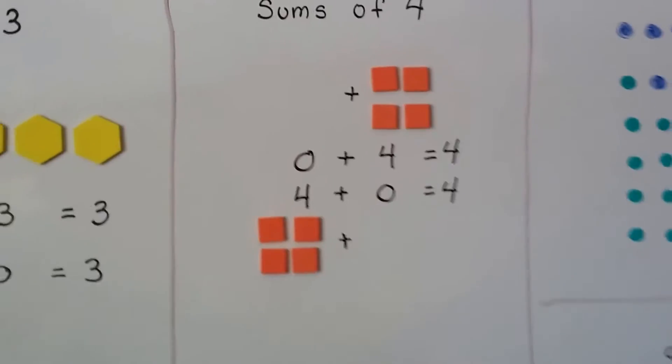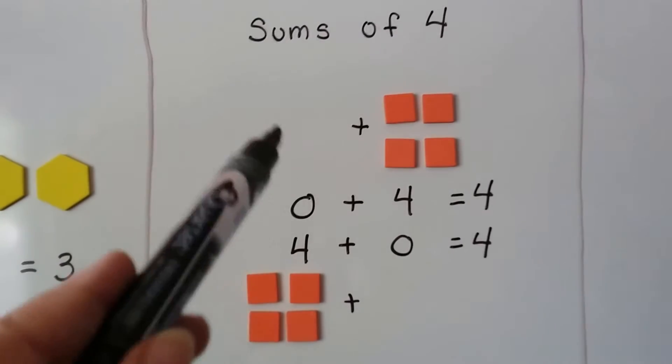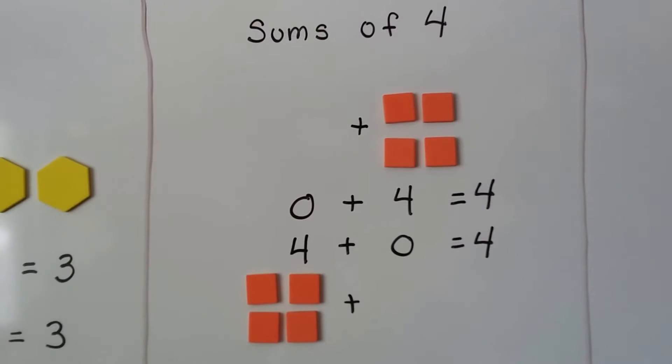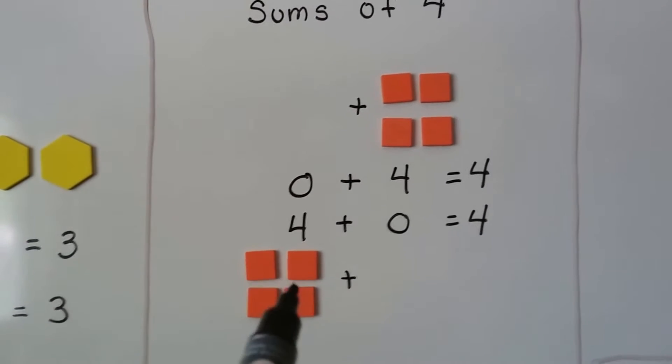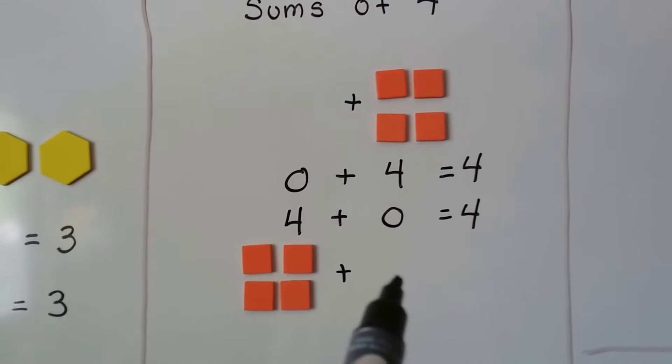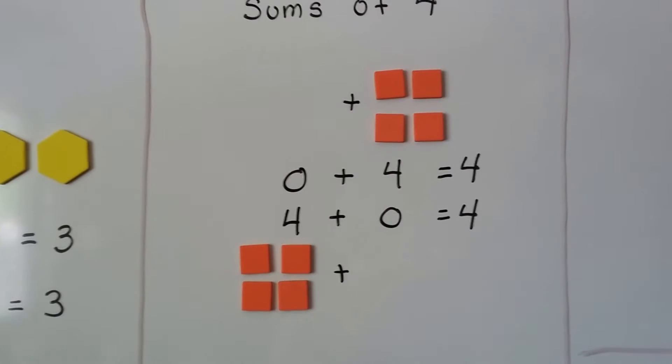Here's some sums of four. We have no counters on this side, but four on this side. So we have zero plus four equals four. Now we have four counters and no counters here. So we have four plus zero equals four.